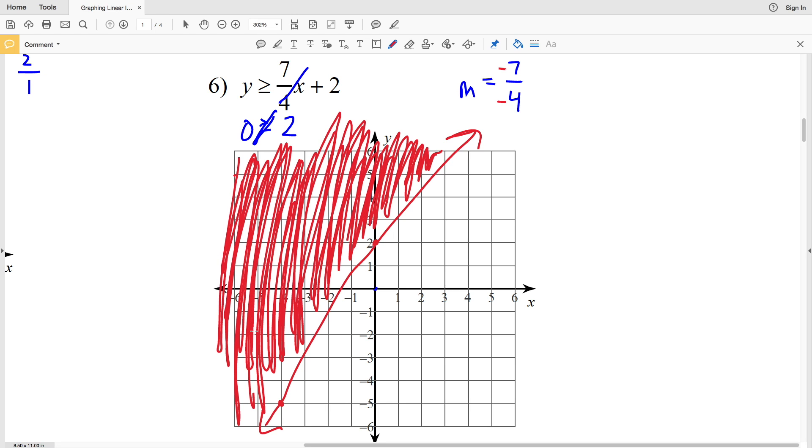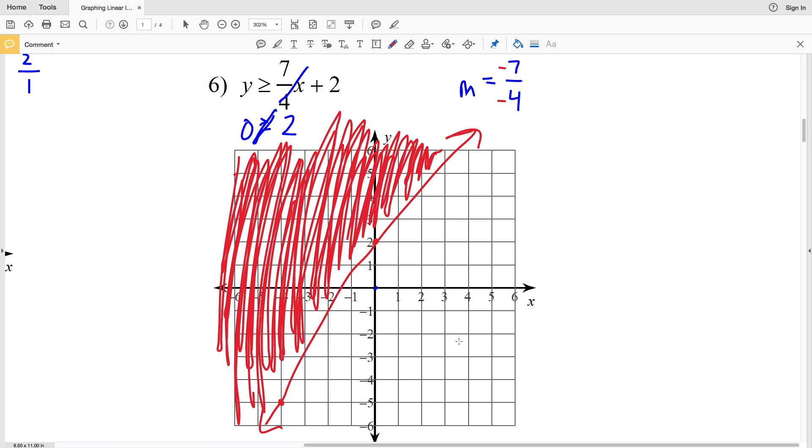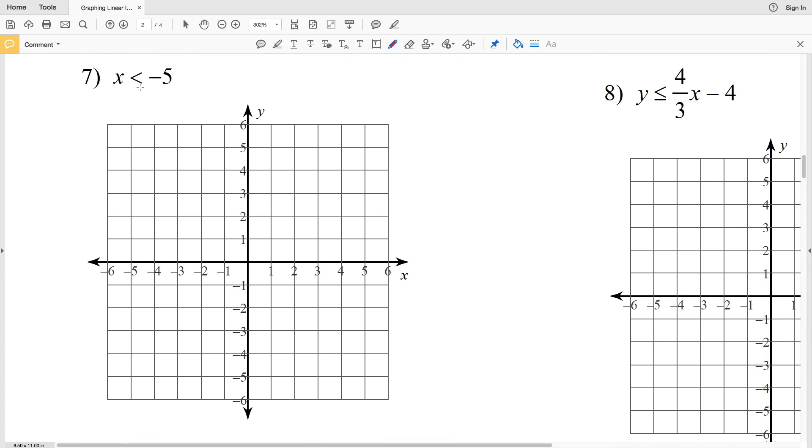And that's the answer for number 6. I apologize for my line not being completely crisp and straight, so I recommend using a straight edge at home, but I don't have the tools that I need here on my computer. But just remember when you're doing this, try and draw the line as straight as possible. Number 7: we have x is less than negative 5.